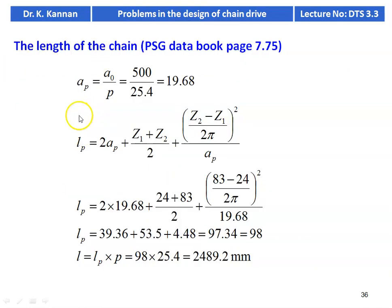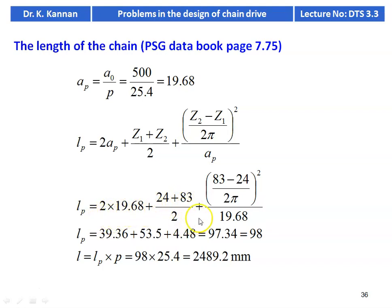Length of the chain: AP = A0/P = 500/25.4 = 19.68 (center distance in terms of pitch). Length in terms of pitch: LP = 2AP + (Z1+Z2)/2 + (Z2−Z1)²/(2π)² / AP = 2×19.68 + (24+83)/2 + (83−24)²/(2π)² / 19.68 = 97.34, rounded to next even number 98. Length of the chain = LP × P = 98 × 25.4 = 2489.2 mm.